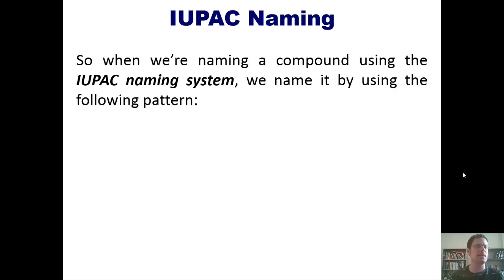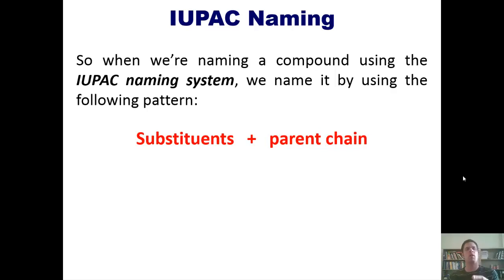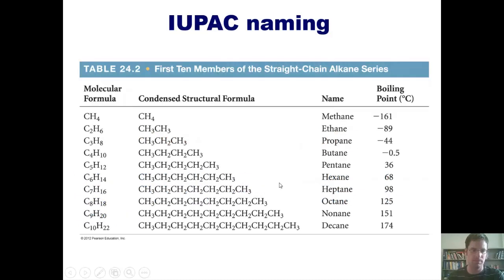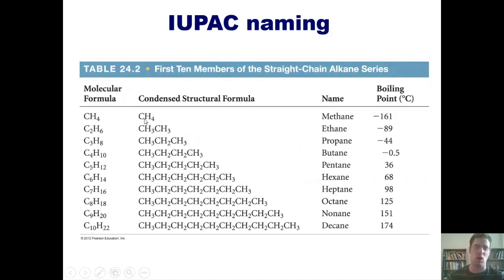So when we're naming a compound using the IUPAC naming system, we name it by using the following pattern: substituent names first, followed by the parent chain name tacked onto the end. The parent chain's name is dependent upon how long it is, as table 24.2 indicates. Here is that table. For a one-carbon-long chain, it's called methane. Two carbons long is ethane. Three carbons is propane, butane, pentane, hexane, heptane, octane, nonane, and decane.